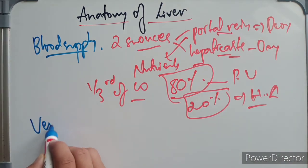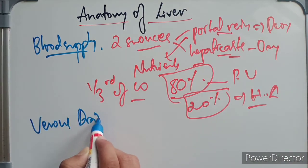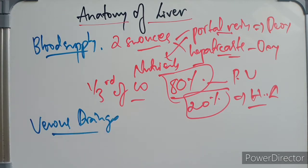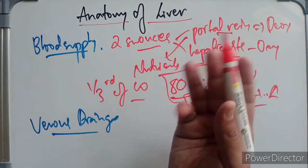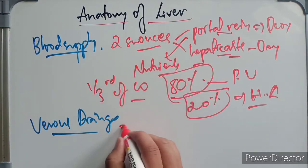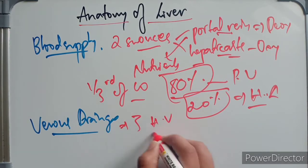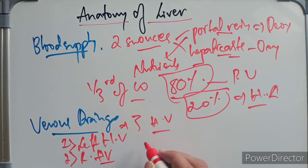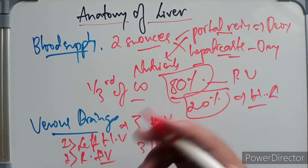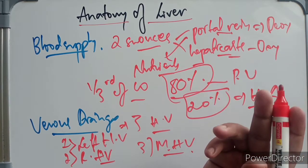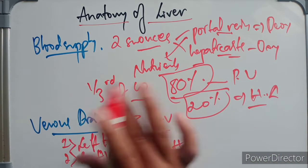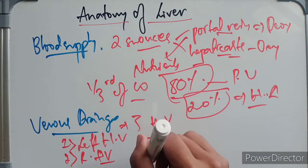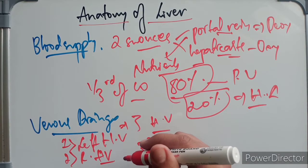Coming to the venous drainage of the liver — most of the venous blood from the liver is drained by three hepatic veins: the left hepatic vein, the right hepatic vein, and the middle hepatic vein. The left hepatic vein is between the middle and lateral segments of the left true lobe. The middle hepatic vein is between the true right and true left lobe. The right hepatic vein is between the anterior and posterior segments of the right true lobe.